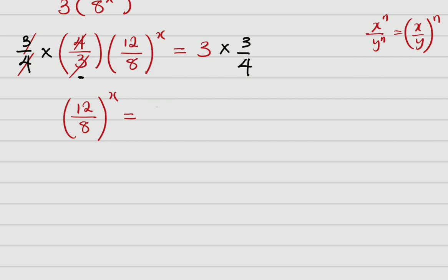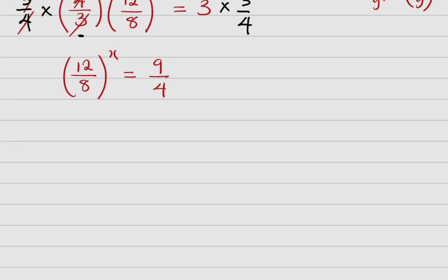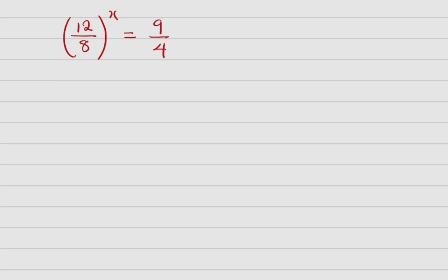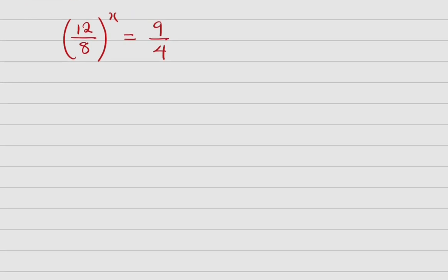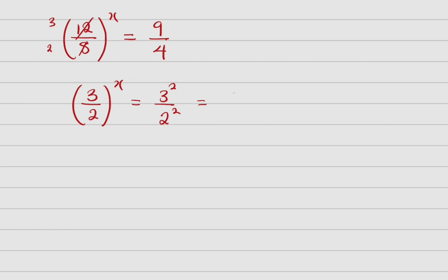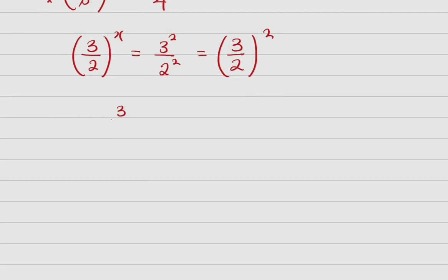On the right side, 3 times 3 over 4 gives us 9 over 4. Now looking at 12 over 8, I reduce it to lowest terms: 12 divided by 4 is 3, and 8 divided by 4 is 2, giving 3 over 2, all raised to power x. And 9 over 4 can be written as 3 squared over 2 squared, which is (3 over 2) raised to power 2.